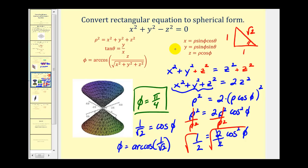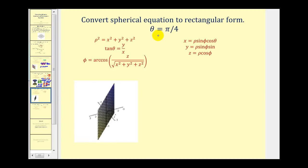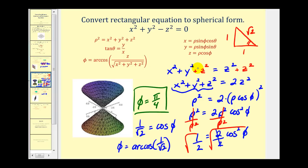Now let's take a look at a couple of equations given in spherical form where we want to convert them to rectangular form. This one says theta is equal to pi over four. If we use the equation where we can replace theta with pi over four, we have an equation that only contains y and x. We would have tangent theta equal to pi over four, so tangent of pi over four equals y over x. Tangent of pi over four would just be one.